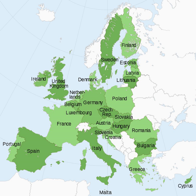The presidency of the Council of the European Union rotates between each of the member states, allowing each state six months to help direct the agenda of the EU. Similarly, each state is assigned seats in Parliament according to their population, with the smaller countries receiving more seats per inhabitant than the larger ones. The members of the European Parliament have been elected by universal suffrage since 1979; before that, they were seconded from national parliaments. The national governments appoint one member each to the European Commission, the European Court of Justice, and the European Court of Auditors.